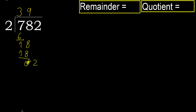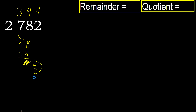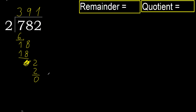Bring down 2. 2 multiplied by 2 is 4 — that is greater. Multiply by 1: 2 is not greater. Subtract: remainder is 0. There is no next number, therefore finish.